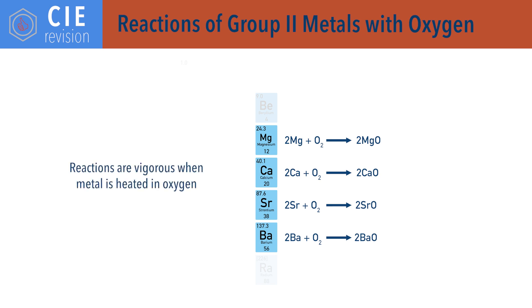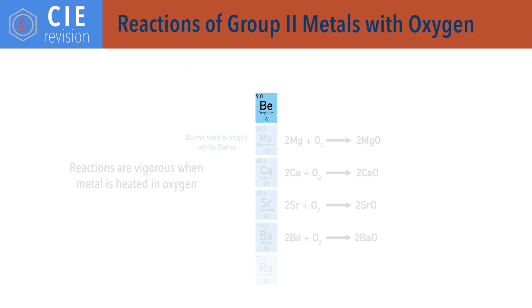For example, magnesium burns in oxygen with a bright white flame. Beryllium only burns in oxygen when in powdered form, due to the forming of beryllium oxide on the surface of the solid, preventing further reaction of oxygen with the solid metal.